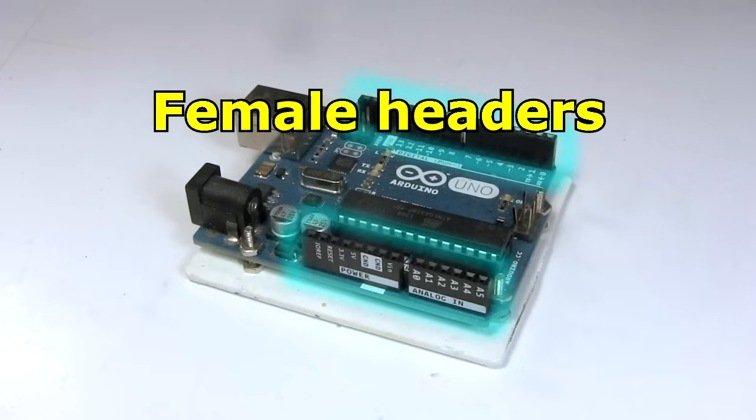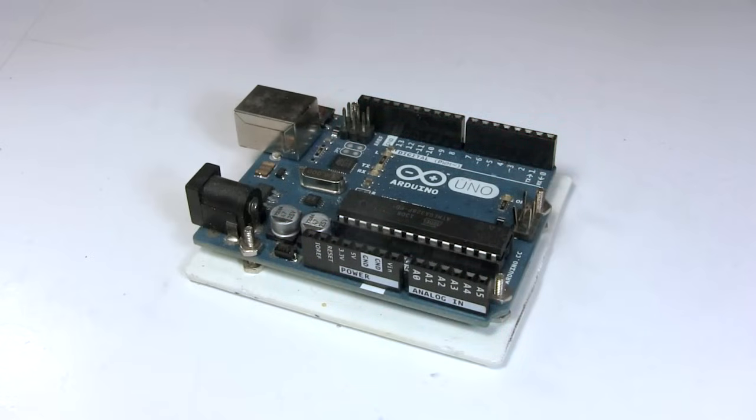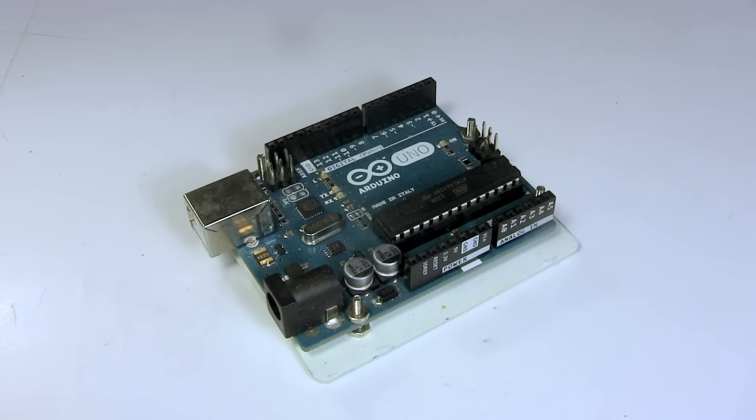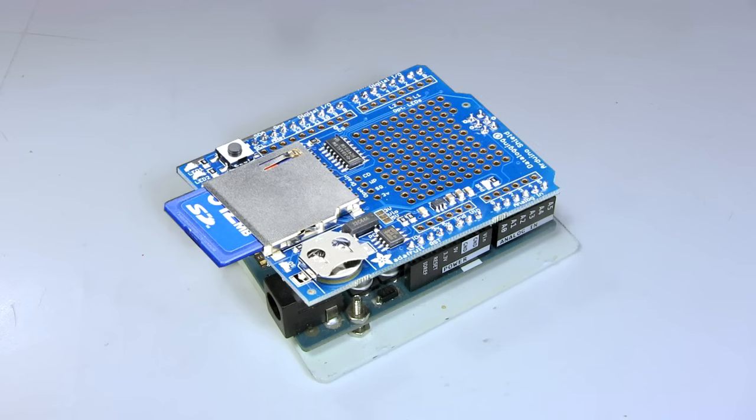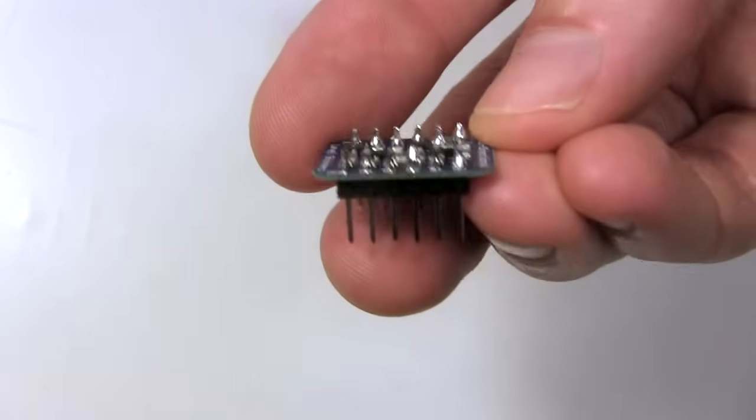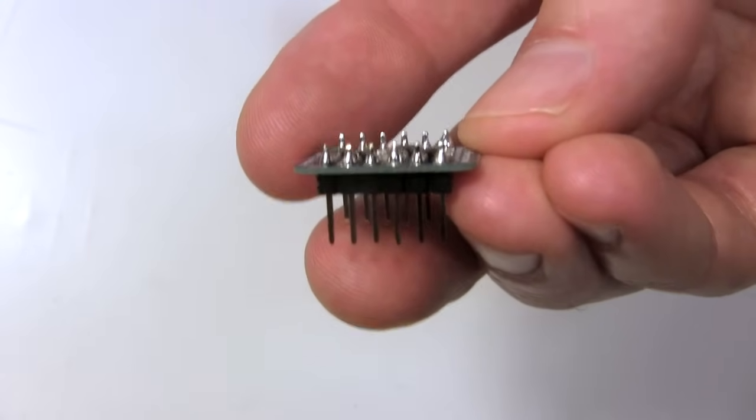Female pin headers are the type you see on an Arduino Uno board. You connect to them using male connectors like this. Or by plugging in another board, again called stacking. For an example, I'll again use the level shifter board I just worked with.